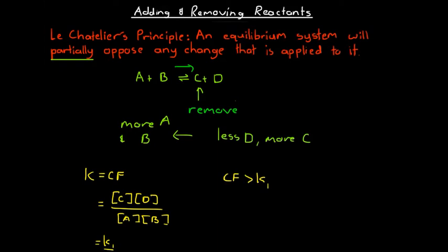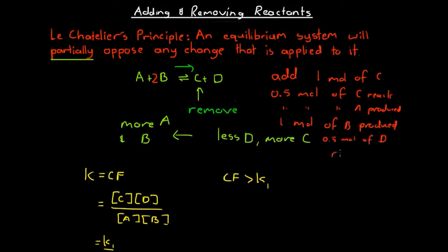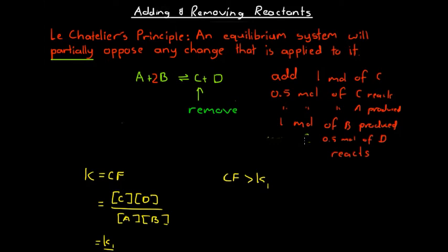Lastly, it's very important to realize that these changes are proportional. For example, if there's a coefficient of 2 on one substance and we add one mole of C, then 0.5 mole of C is reacted away. That means 0.5 mole of A is produced, 1 mole of B is produced, and 0.5 mole of D is also reacted away. So it's just like straightforward stoichiometry. This matters because we want to be able to graph the way our concentrations change when we alter our system.